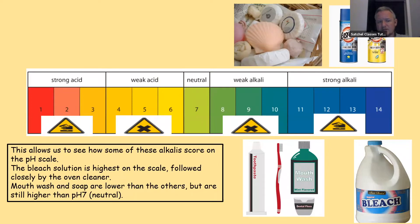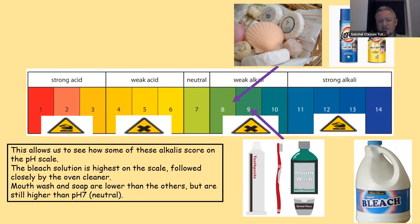This allows us to see how some of these alkalis score on the pH scale. Bleach solution is highest on the scale, followed closely by oven cleaner. Mouthwash and soap are lower than the others but still higher than pH 7, which is neutral.